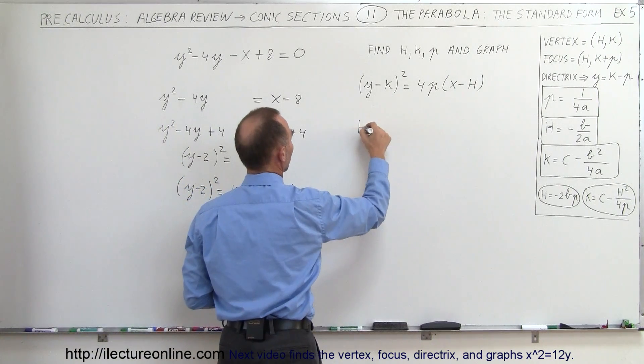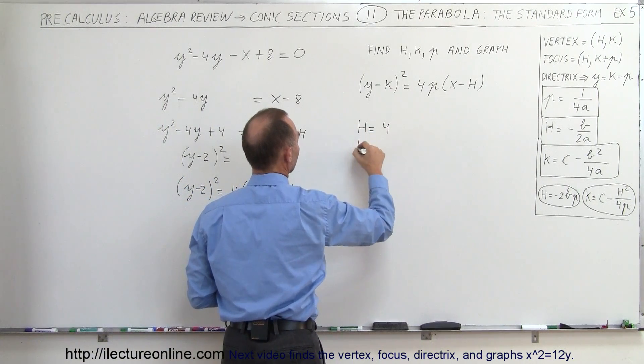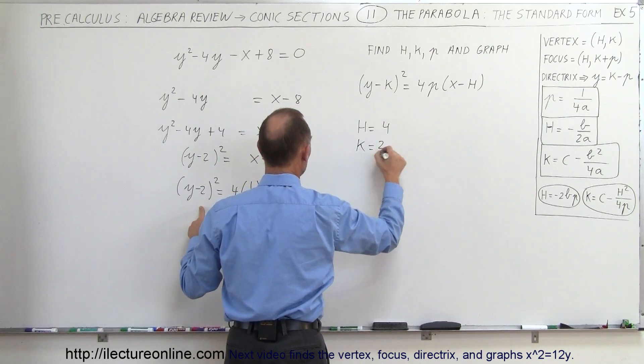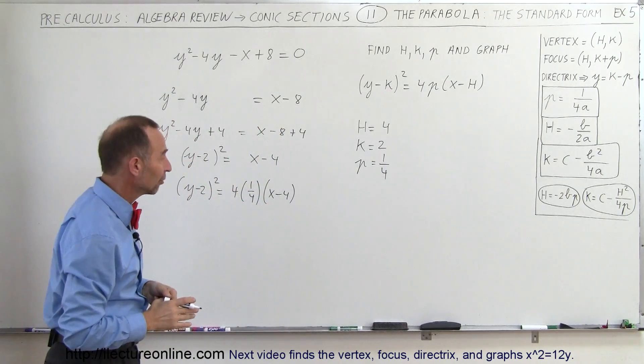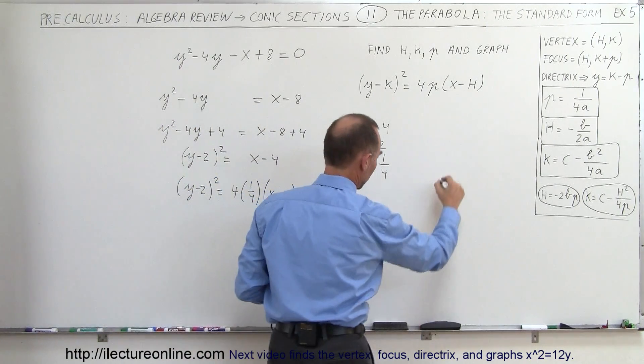So that means h equals 4, k is equal to 2, and p is equal to 1/4. We're now ready to go ahead and graph this parabola.